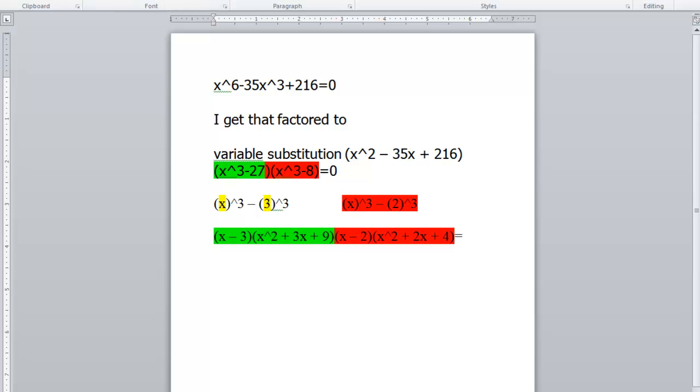So in order to solve this problem, we now take each of our factors and set it equal to 0. So we have x minus 3 equals 0. x squared plus 3x plus 9 is equal to 0.